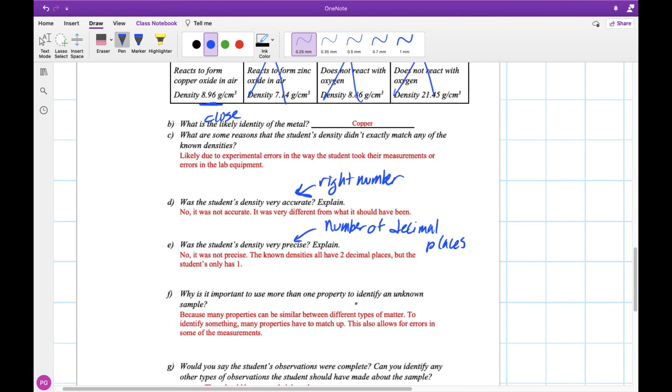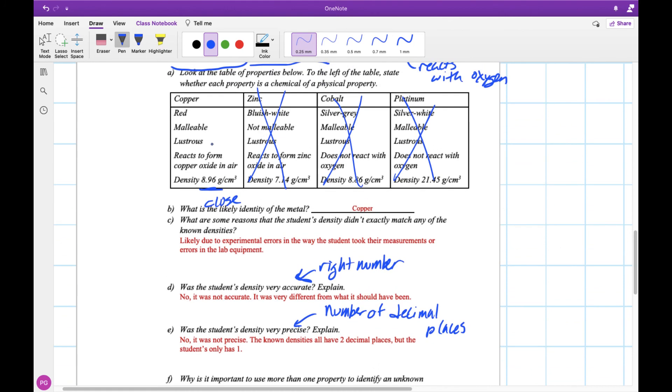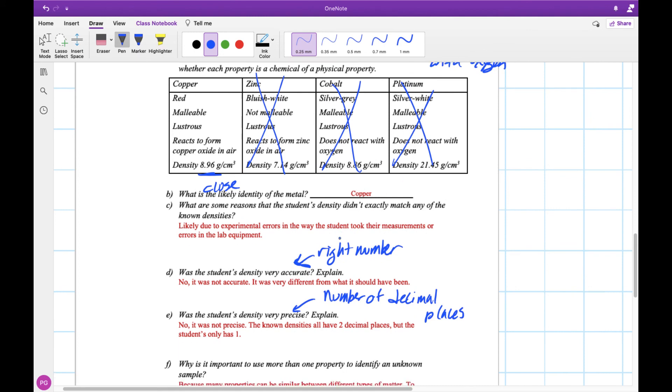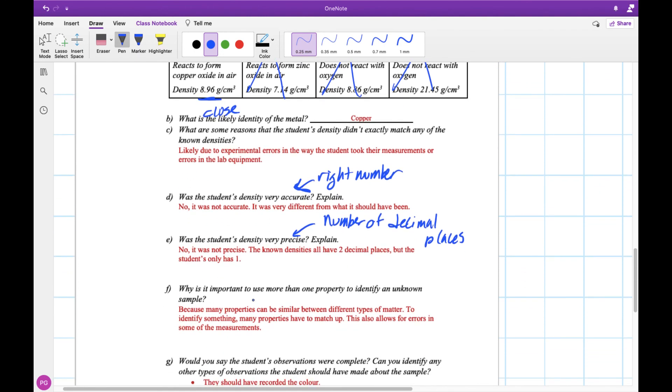And why is it important to use more than one property? We kind of went through it. By going through all these other properties, we could cross out these ones and be left with copper. And even if our density was a little bit off, if we were just looking at the density, we could have said that it was zinc or cobalt. Both of these other ones are pretty close to 8. But notice how by having all of these other properties, we were able to match up the correct one and be very confident in our answer. And it allows for some errors in our measurements. By taking a lot of data, we can look at the one that fits best, even if some of our measurements aren't exact.